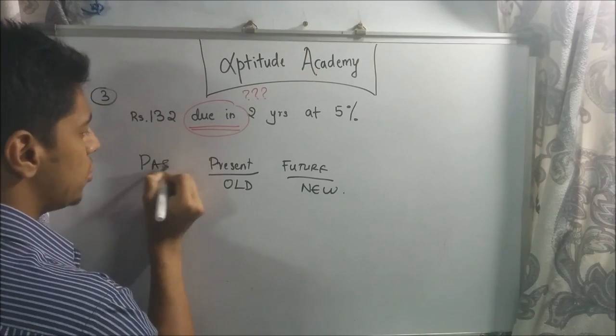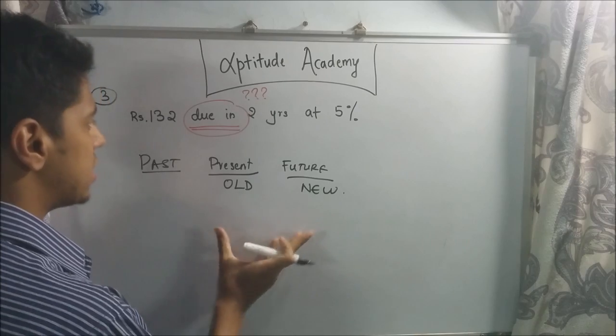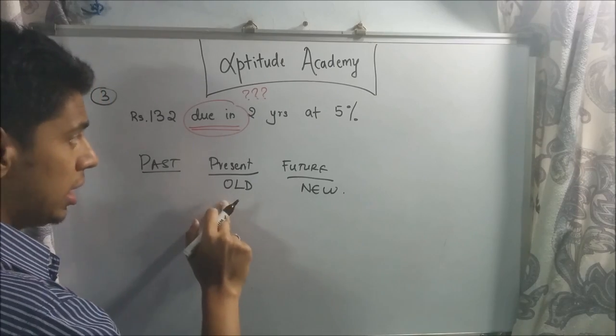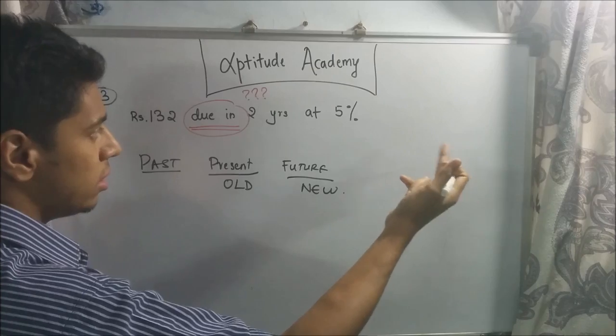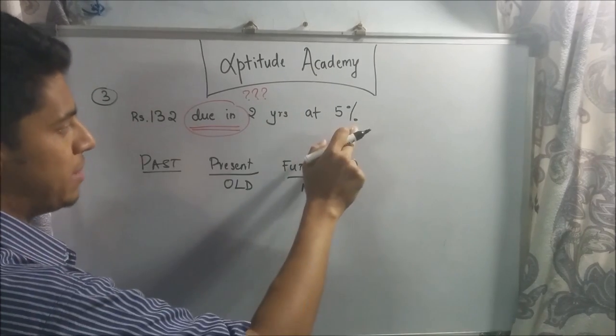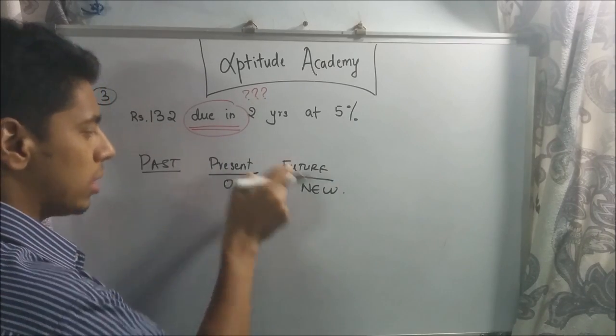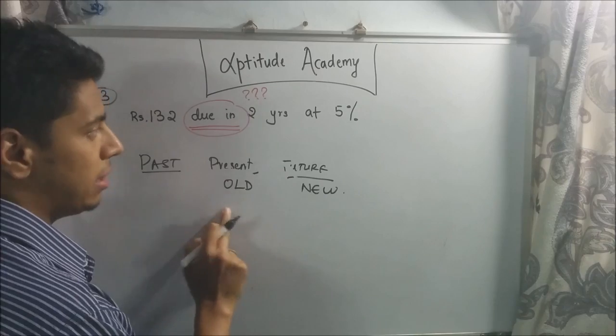See, you have past, present, and future. The earlier one will always be old. It's obvious. So what is the present worth if rupees 132 in the future you will get if that old money was kept for 2 years at 5%? So 132 is your new money. So what is the present worth? What is the old money? What is the principal? That's what they're asking.